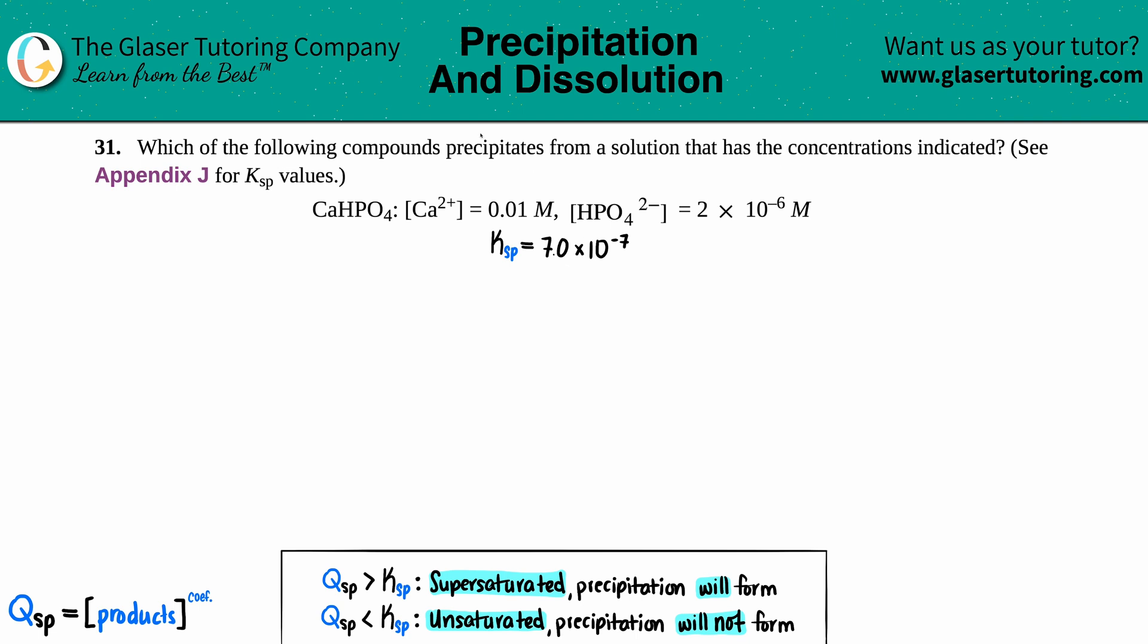Number 31: Which of the following compounds precipitates from a solution that has the concentrations indicated? See Appendix J for Ksp values. In this case we have Ca(HPO4). They gave us the concentration of Ca2+ which is 0.01 molarity, and then HPO4 2- is 2 times 10 to the negative 6 molarity.